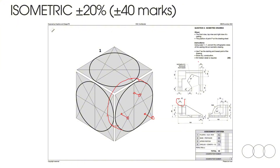Remember that we do not show any hidden detail in isometric — there should be no dotted lines in your drawing. However, there should be center lines where applicable, like with a circle. Center lines do count marks, so make sure that you include circle construction and center lines.